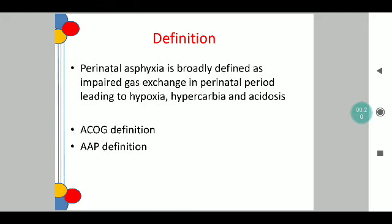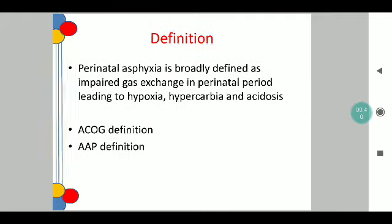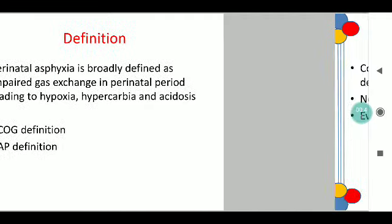Perinatal asphyxia or birth asphyxia broadly is defined as an impaired gaseous exchange during the perinatal period, as a result of which leading to hypoxia, hypercarbia and acidosis. There are two widely regarded definitions for perinatal asphyxia: one defined by the ACOG, that is the American College of Obstetricians and Gynecologists, and the AAP definition which is by the American Academy of Pediatricians.